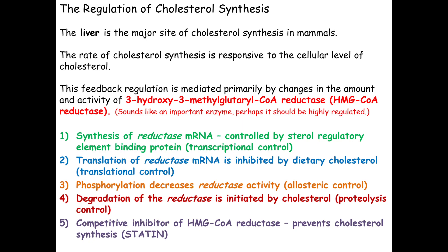How do we regulate this enzyme? We regulate it at multiple levels — four different levels — and as humans we've come up with a fifth. The first way: don't make the mRNA that codes for it. At the level of transcription, we can say don't make this message. Cholesterol itself acts as a transcriptional regulator — it can bind to certain proteins, they go to the nucleus, bind to DNA, and act as transcription factors. In this case it turns transcription of the mRNA off. Cholesterol binds to a sterol regulatory element and turns off production of the HMG-CoA reductase mRNA. It doesn't turn it off completely — the cell will still make a few molecules — but not a lot in the presence of cholesterol.